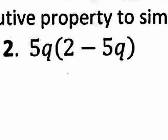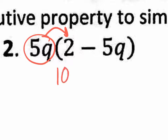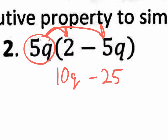Number two, we have a 5q. It's not just a number — it's actually a number with a variable. 5q times 2? And then 5q times negative 5q gives us negative 25q squared.